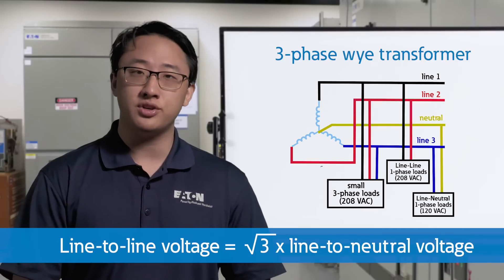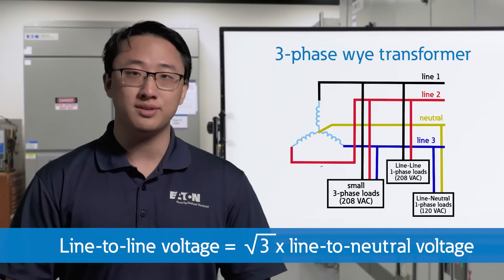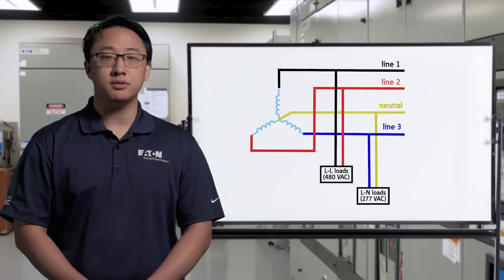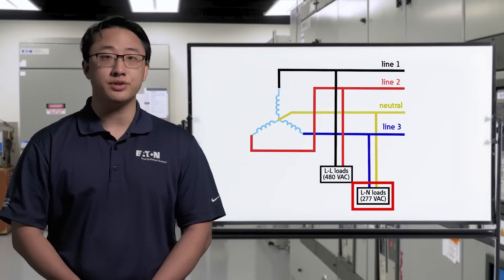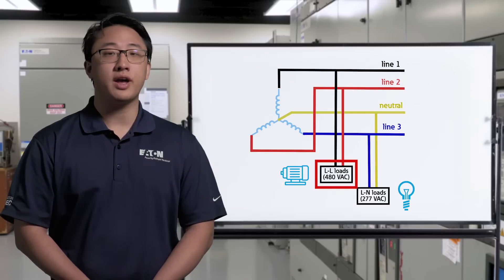The 208 comes from the transformer relation line-to-line voltage equals square root of three times line-to-neutral voltage. A common higher power version of the same Y configuration is available with 277 line-to-neutral voltage, most often for lighting, and 480 line-to-line voltage, usually for heavy motor loads.